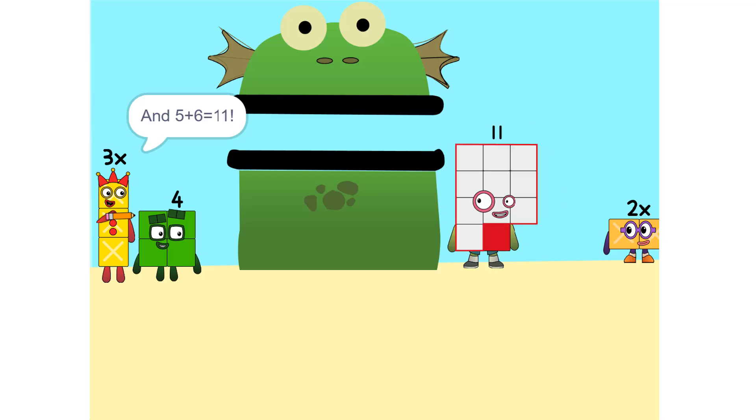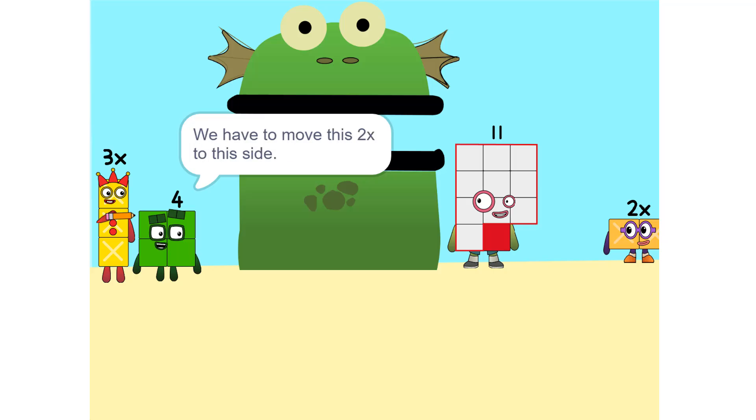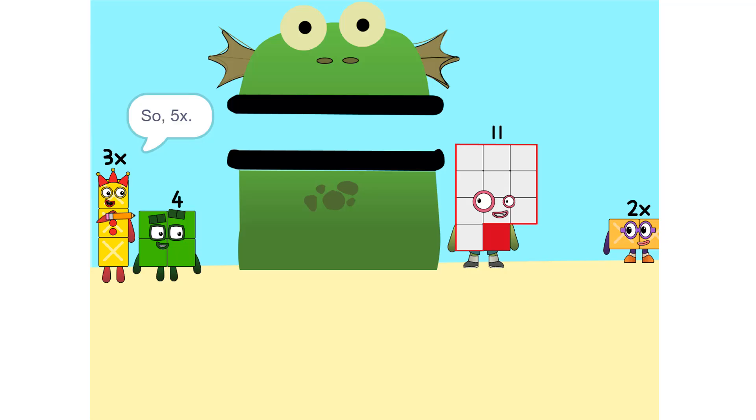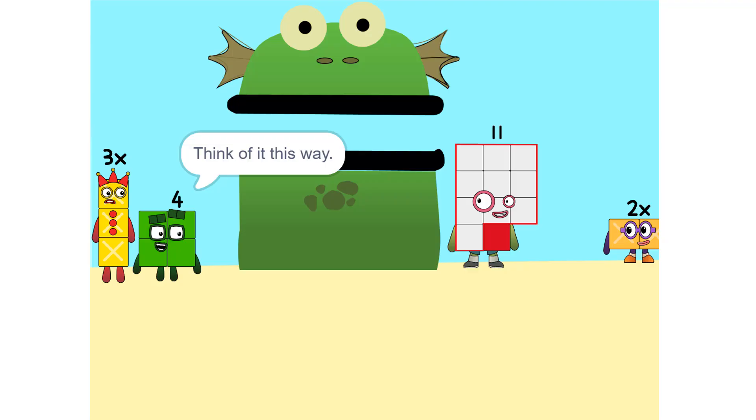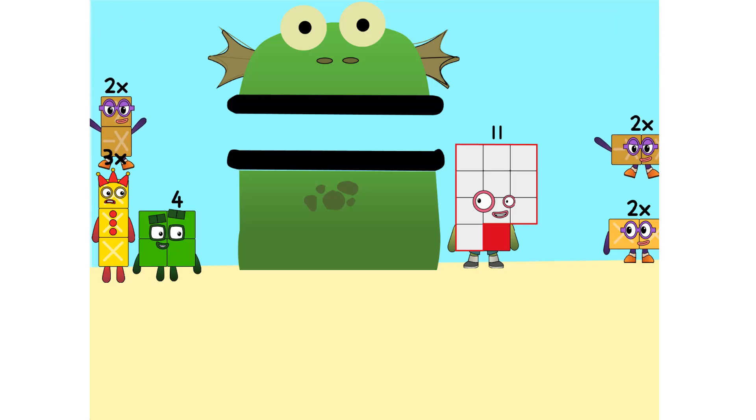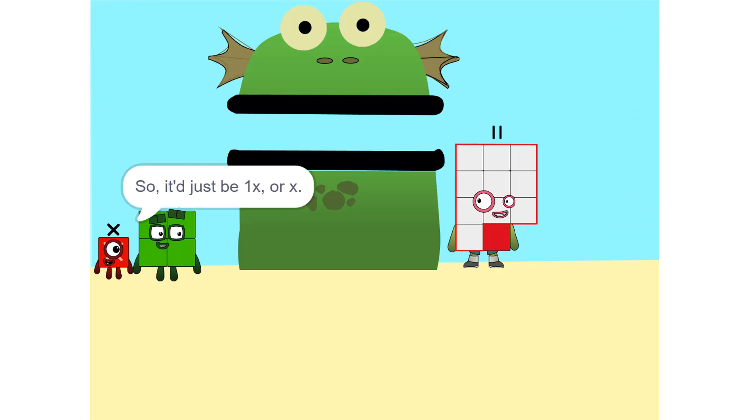And five plus six is eleven. Yeah. Now we have to move things around. We have to move this two x to this side. Oh, so five x? Whenever you switch sides, you have to switch its sign. So if it's positive it becomes negative and vice versa. Why? Think of it this way: you're subtracting two x from each side. Oh, so it'd just be one x, or x. Correct.